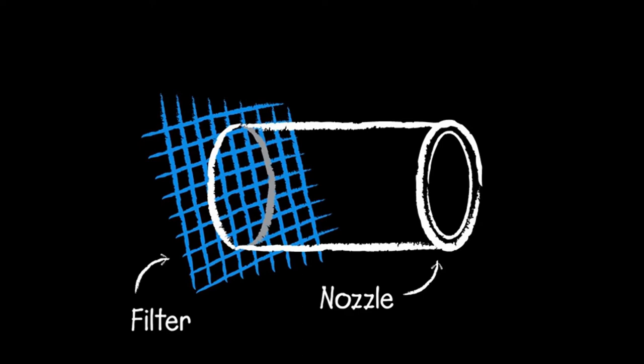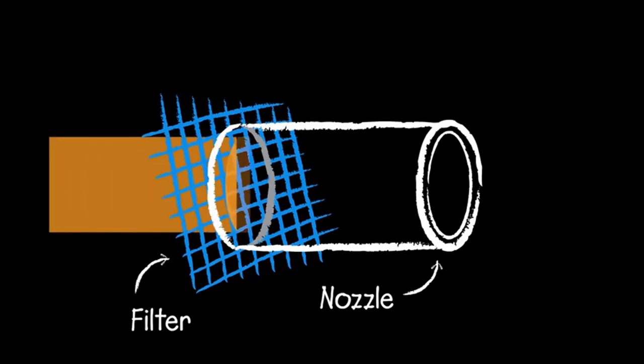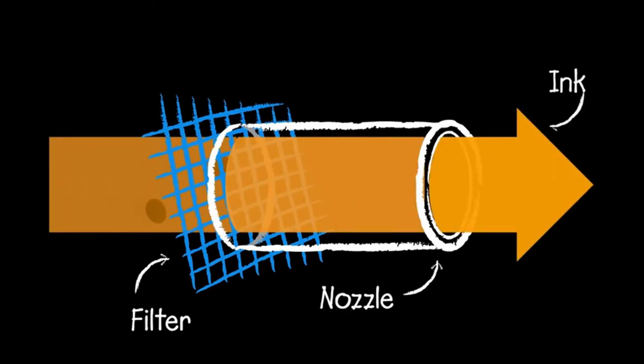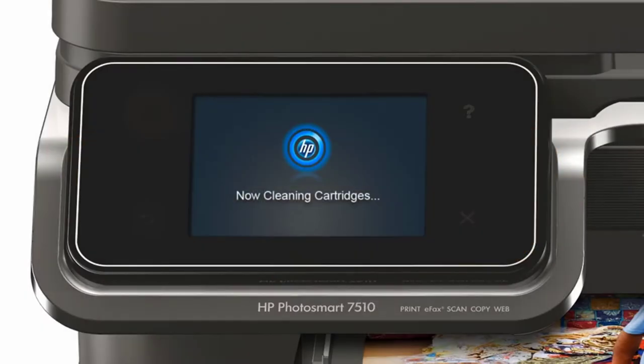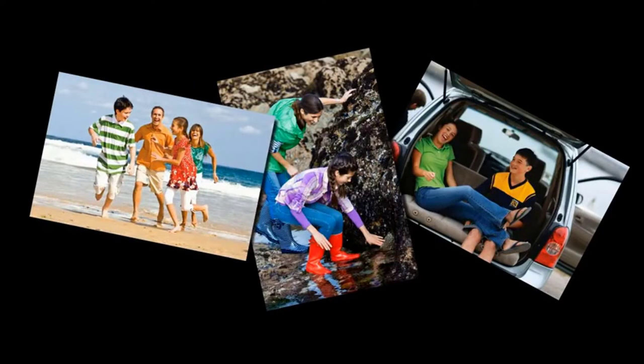Now let's talk about the other component. Original HP ink cartridges come with a small filter. This is essentially a microscopic screen that protects the nozzles and strains impurities. A clean nozzle means you don't waste ink by cleaning the cartridges. You also get better looking prints.